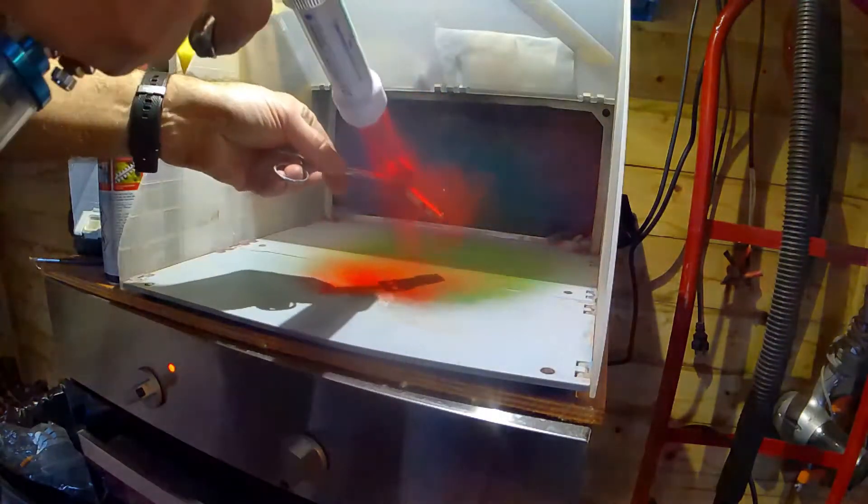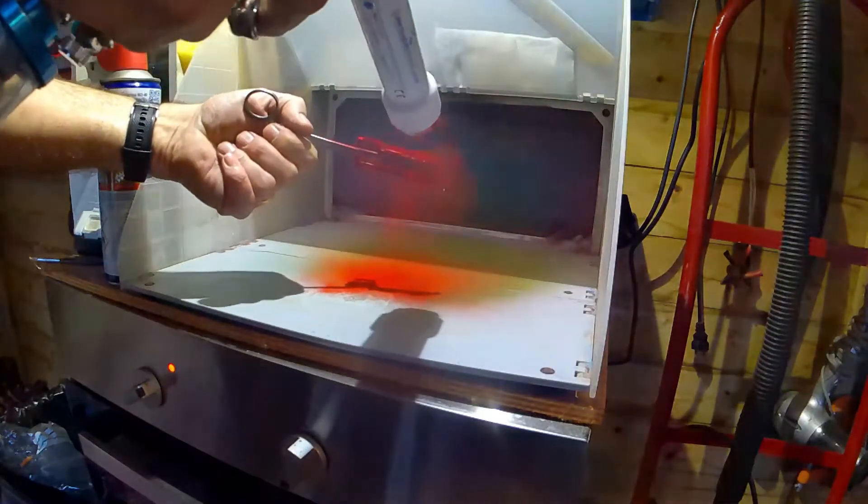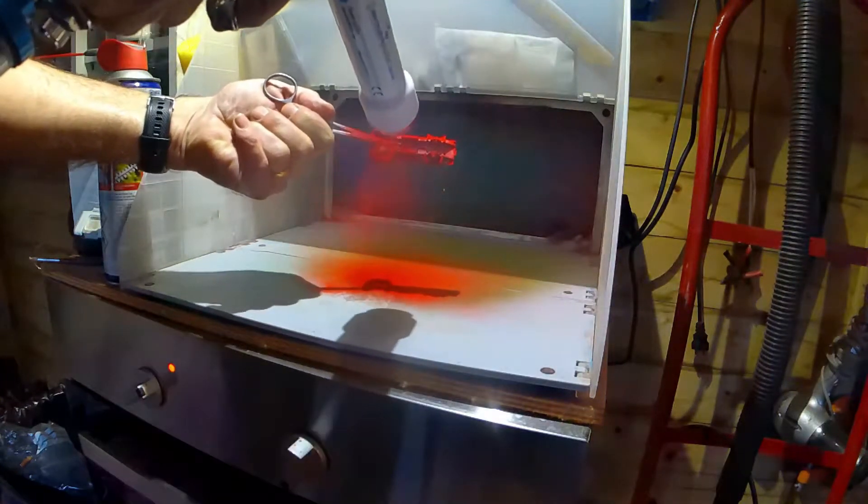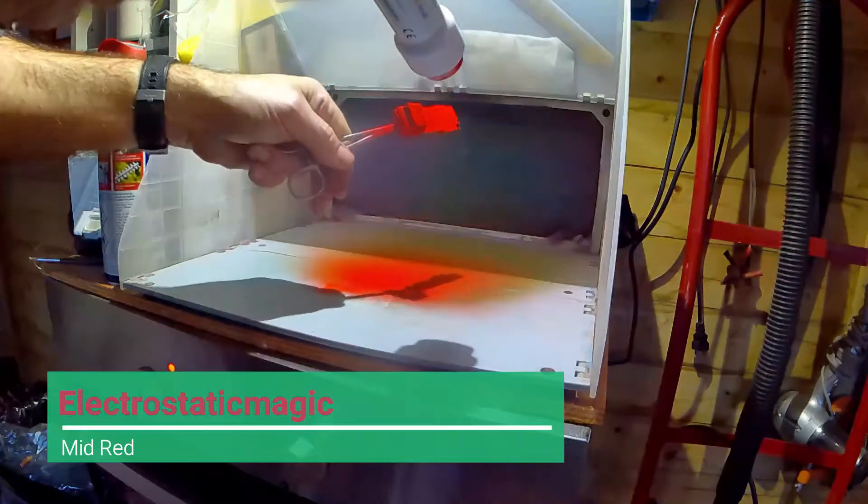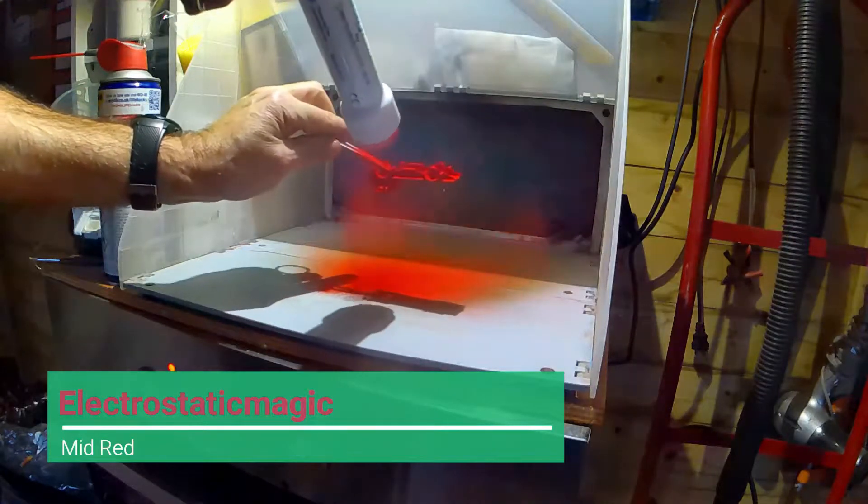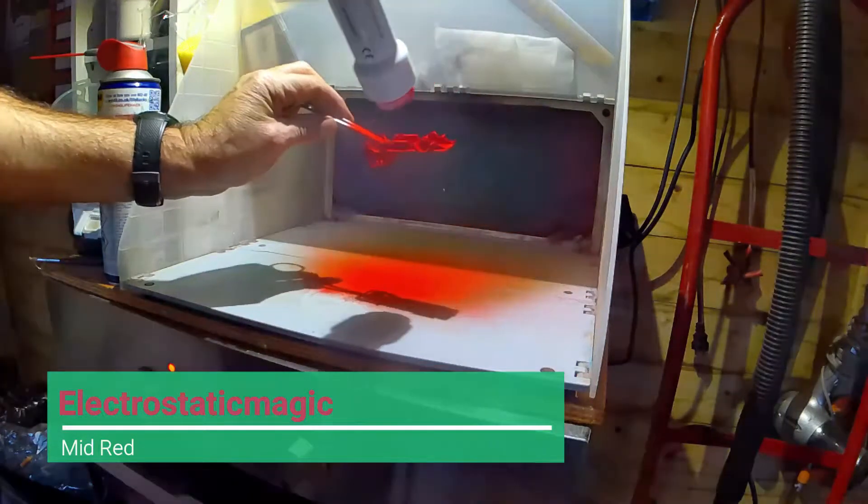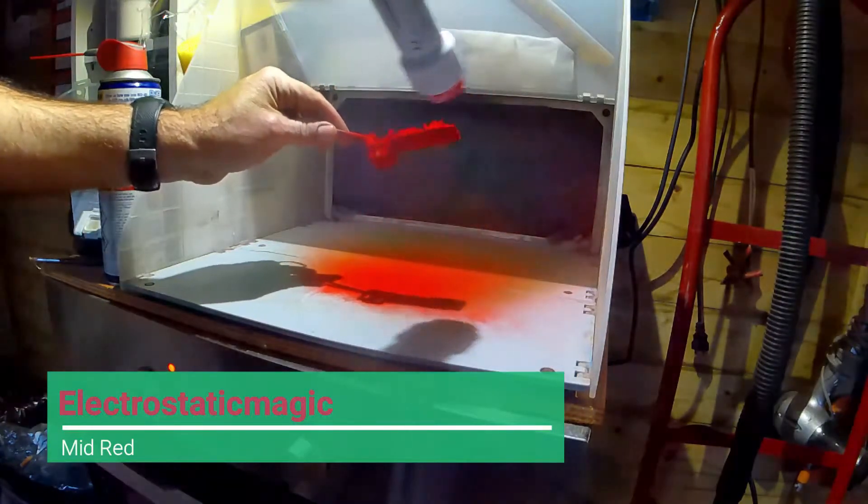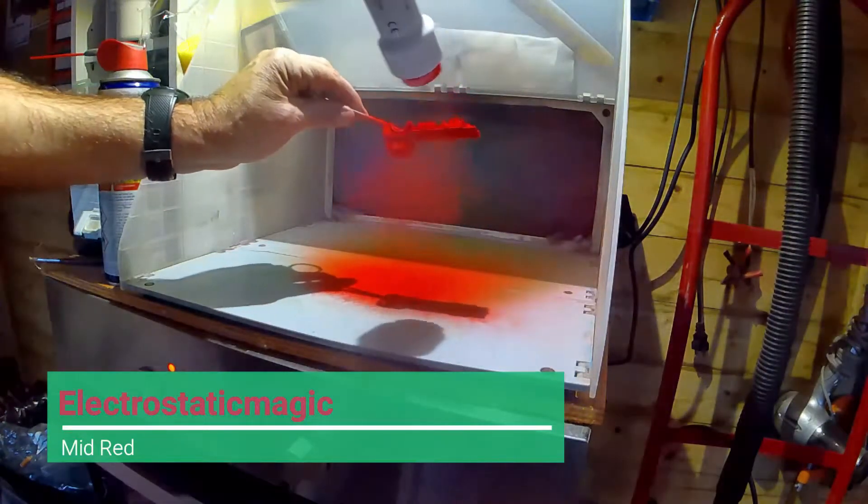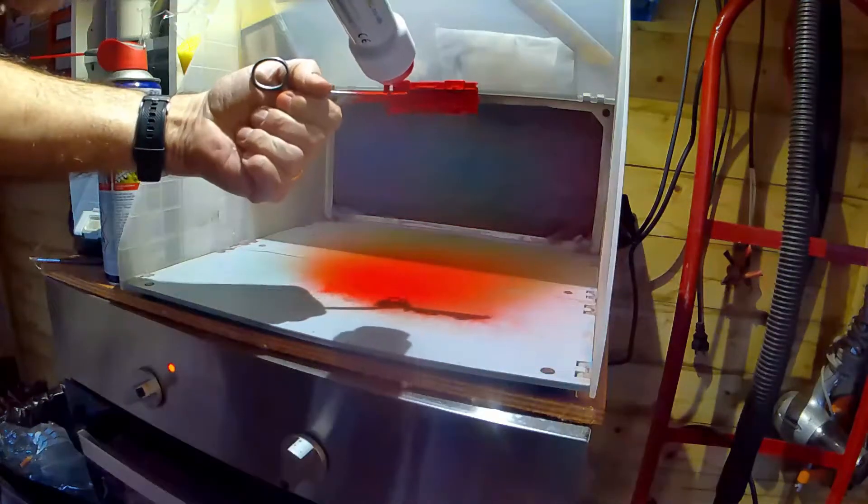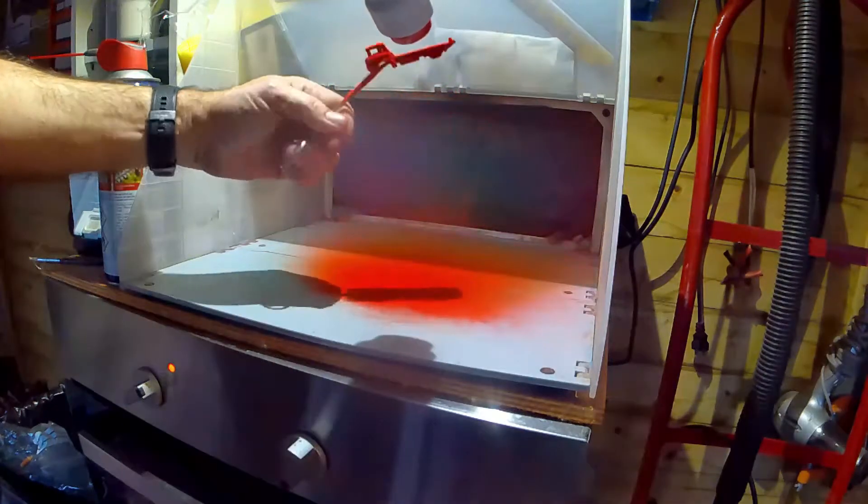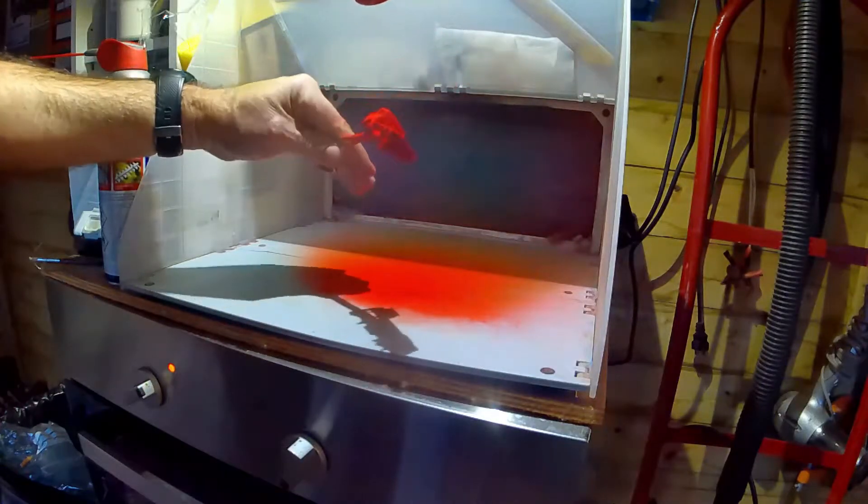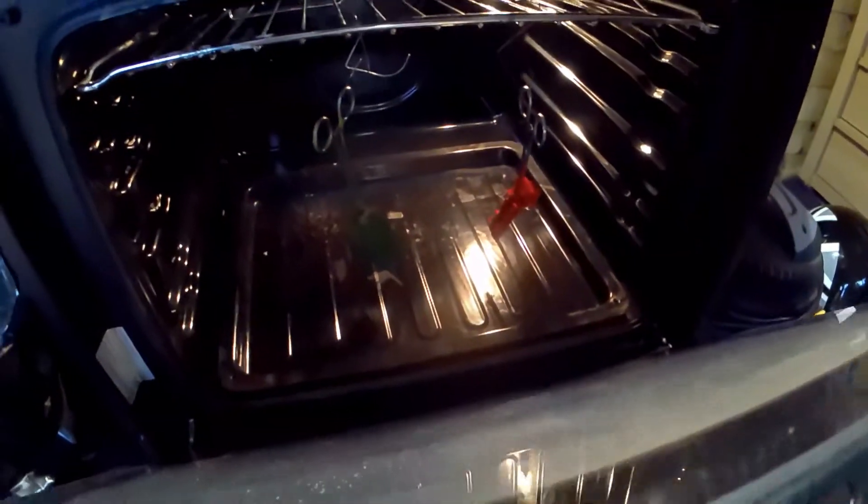And then the main lorry parts we're going to use electrostatic magic mid red on this one. It's quite important to try and get the powder into all the little nooks and crannies. And then into the oven for 10 minutes at 180 degrees.